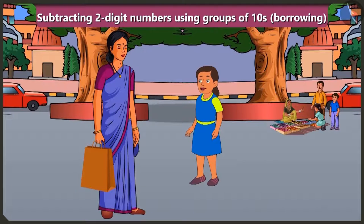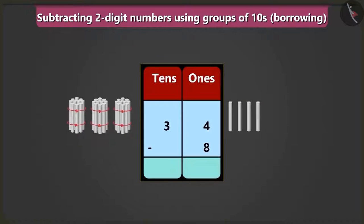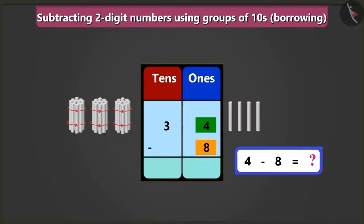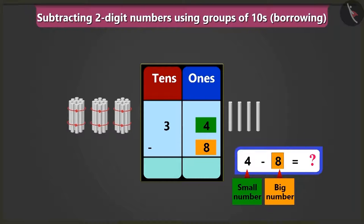Mommy, how is subtraction done? Come, I will explain. To subtract eight from thirty-four, we will write thirty-four and eight in the boxes of ones and tens. Thirty-four means three tens and four ones. Now we have eight ones, so we will write it in the box of ones. Its box of tens will stay empty. Now first of all, we will have to subtract eight from four in the box of ones. But here, four is smaller than eight in the box of ones. So how will we subtract eight from four?